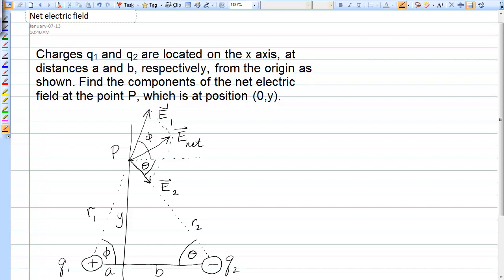Okay, now we'll find the magnitudes of E1 and E2 using the definition of the electric field due to a point charge. So the magnitude of E1 is equal to Coulomb's constant K times the magnitude of Q1 over the distance from the charge to the point of interest squared.